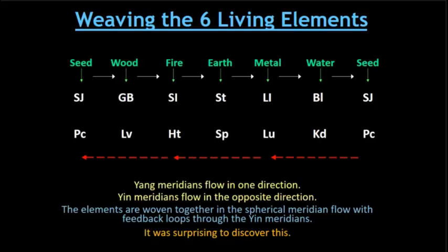The element order goes in reverse among the yin meridians. So you have the yang meridians flowing in one direction and the yin meridians flowing in the opposite direction. Now the elements are woven together in the Spherical Meridian Flow with feedback loops through the meridians. I am going to show you a threading animation — you are going to see lines moving around showing how the meridians relate on the surface of the Spherical Meridian Flow. It doesn't show all of the arrows and relationships, but it shows these important ones.